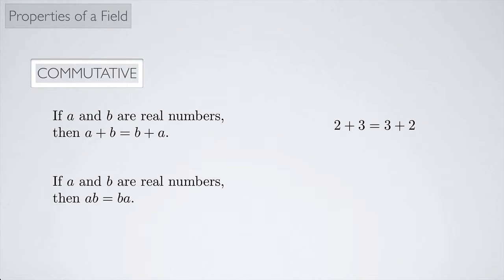Okay, commutative. So the commutative property also has both an additive and multiplicative counterpart. If A and B are real numbers, then A plus B equals B plus A. In other words, it doesn't matter what order you add in. An example would be 2 plus 3 is the same thing as 3 plus 2. It seems really obvious, but we need it if we're going to have something called a field. It has to be one of the properties that we have. And for multiplication, same thing. If A and B are real numbers, then A times B equals B times A. And an example would be 2 times 3 is 3 times 2.